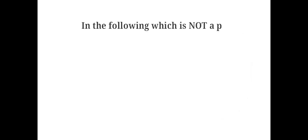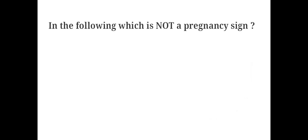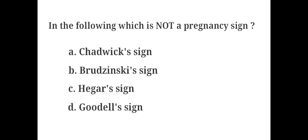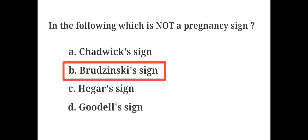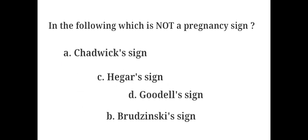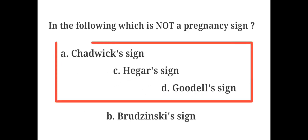In the following, which is not a pregnancy sign? A. Chadwick's sign, B. Brudzinski's sign, C. Hager's sign, D. Goodell's sign. The answer is B. Brudzinski's sign. Chadwick's sign, Hager's sign and Goodell's sign are signs of pregnancy, whereas Brudzinski's sign is a sign of meningitis and not a sign of pregnancy.